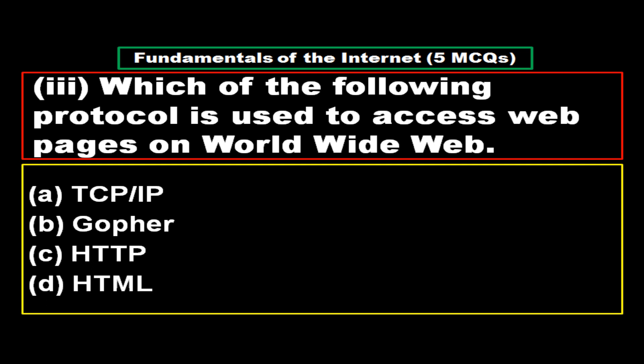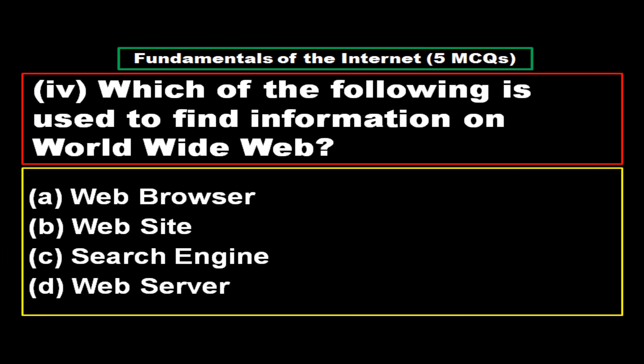Question 3: Which of the following protocols is used to access web pages on the World Wide Web? Option A: TCP/IP, option B: Gopher, option C: HTTP, option D: HTML. The right answer is option C, HTTP.